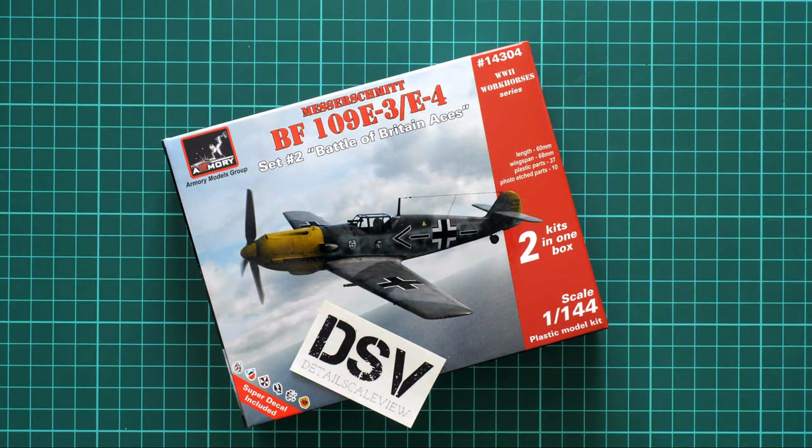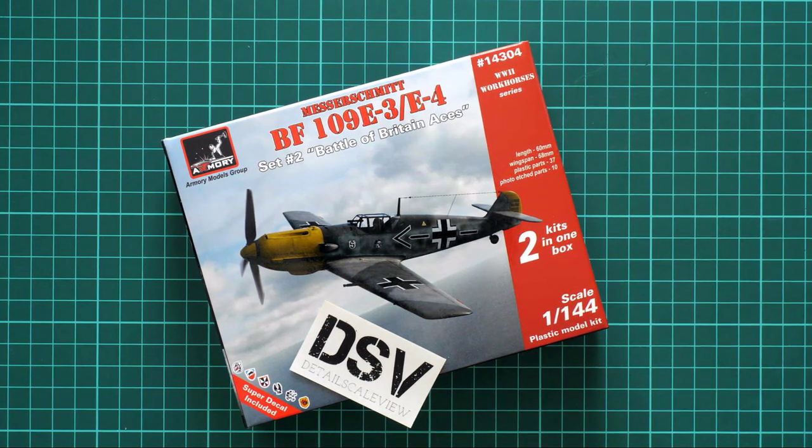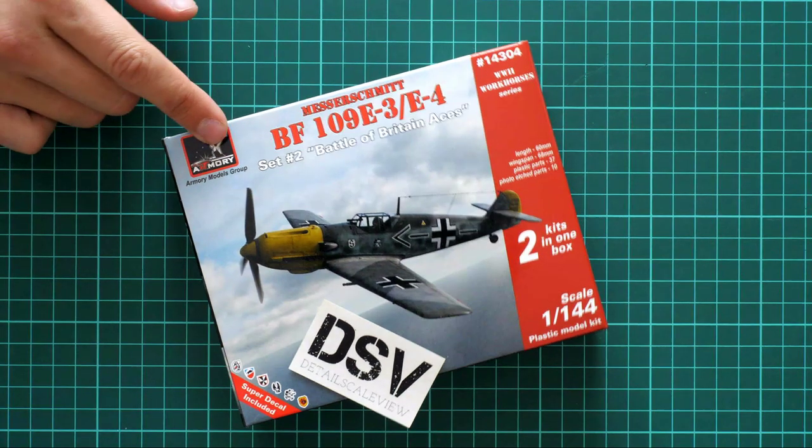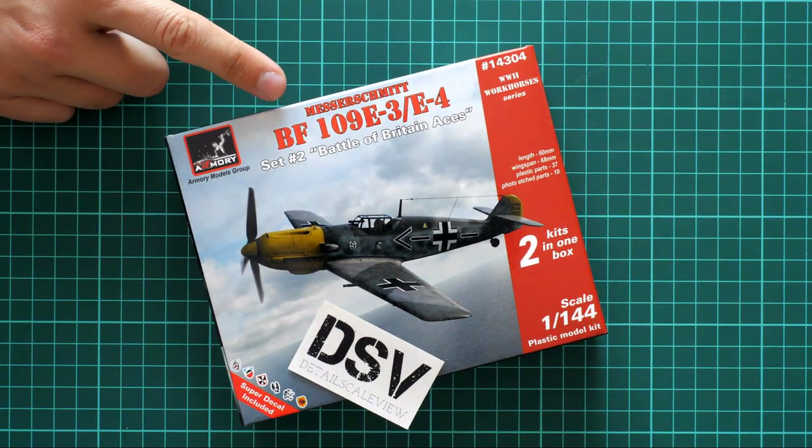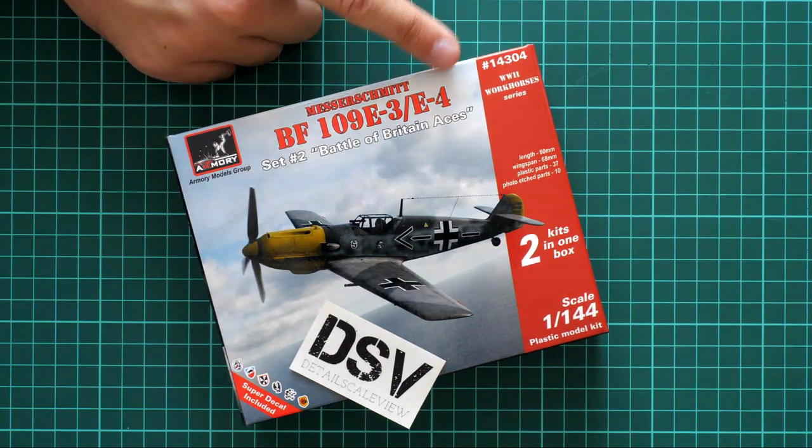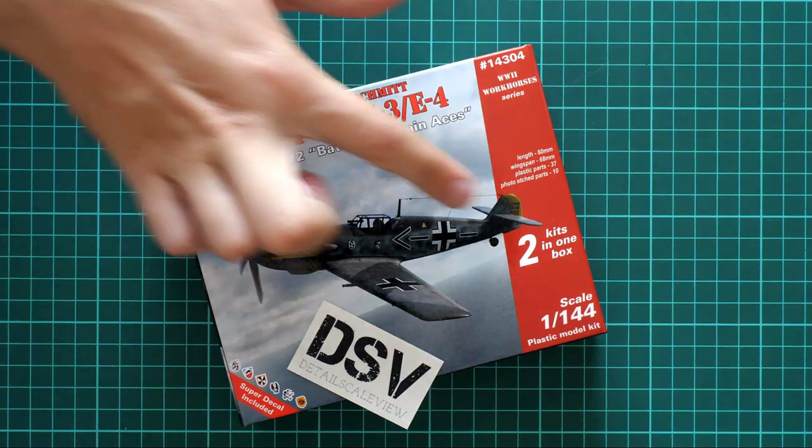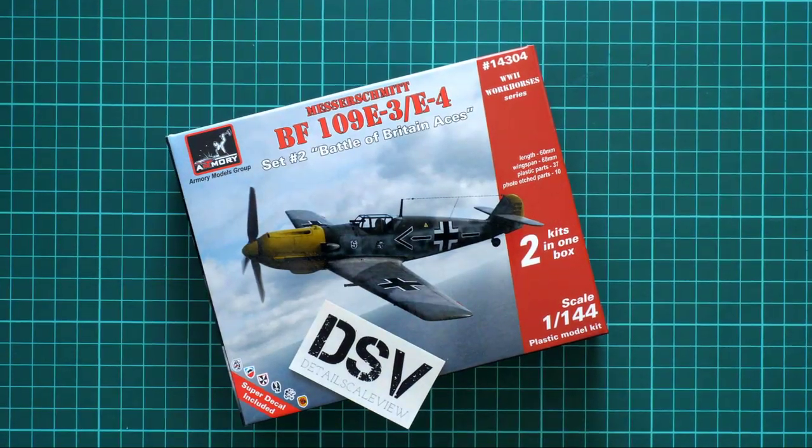Hello everyone, today we have another live stream review and as you can see we return to plastic kits. In the previous video we were checking the book about aircraft, now we are checking the aircraft kit. As you can see it comes from Armory Models Group and it covers Bf 109E-3 and also E-4. It is molded in 1/144 scale and an interesting feature about it is that there are two kits in one box.